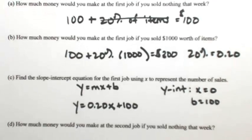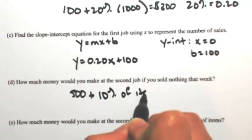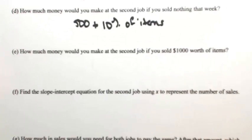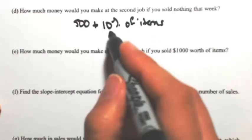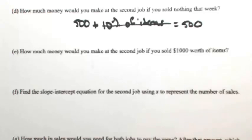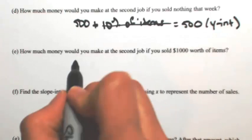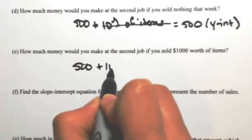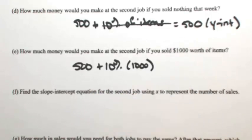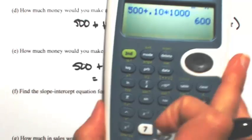Let's do the same thing for the second job. The second job is $500 per week plus 10% commission. If you sell nothing, you are not going to get any commission, so you get $500 — that is your y-intercept. If you sell $1,000, you still get $500 and then 10% of $1,000. So 500 plus .10 times 1000 means you make $600.